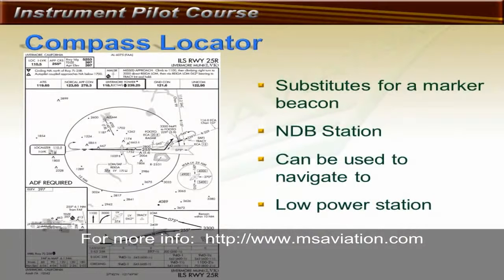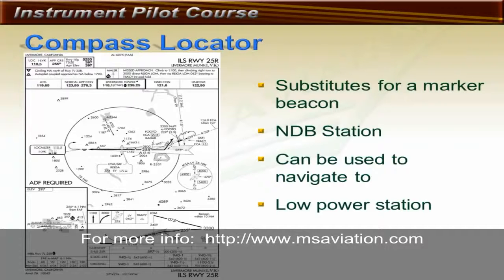Sometimes an ILS system will have a compass locator instead of a plain marker beacon. The compass locator is a very low power NDB station paired with a normal marker beacon. You must have an ADF receiver to use the NDB functionality of a compass locator. The advantage of the compass locator is that because it's an NDB, you can navigate to and from it. For example, at Livermore Airport, the missed approach procedure uses the NDB, and the pilot must have an ADF receiver or GPS to perform the missed approach procedure.